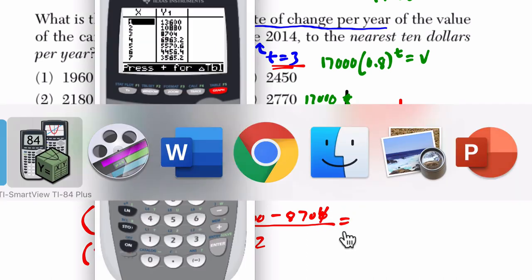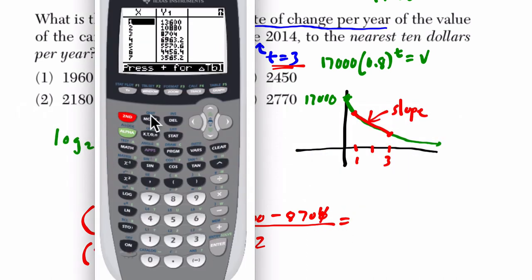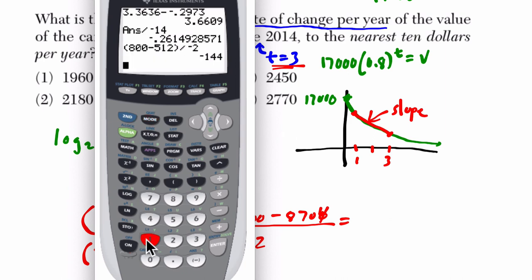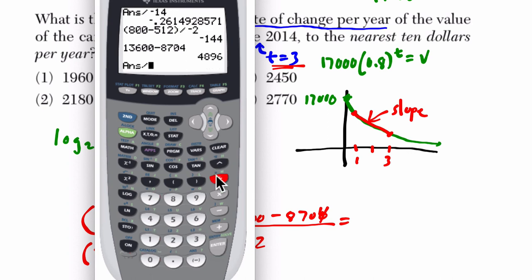And then we calculate this. So 13,600 minus 8,704, enter, divide it by negative two. So the car has gone down in value $2,448. To the nearest $10 is 2,450.